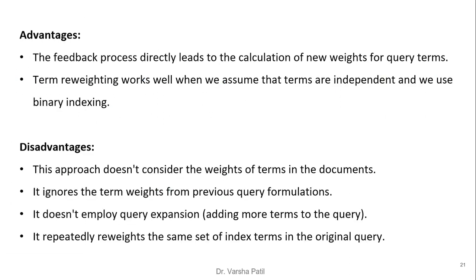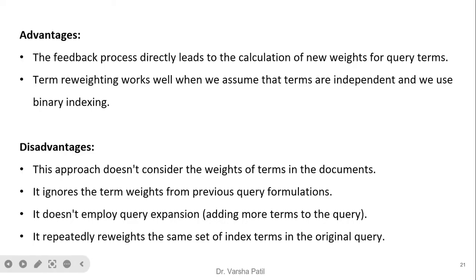Advantage: the feedback process directly leads to calculation of new weights for query terms. Term reweighting works well when we assume terms are independent and use binary indexing. Disadvantage: this approach does not consider the weights of terms in documents — TF and IDF are not considered, only presence of the keyword. It ignores term weights from the previous query formulation and does not employ query expansion. It repeatedly reweights the same set of index terms in the original query, so no new terms are added. Therefore, the initial query must be powerful; otherwise the method does not achieve much success.